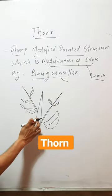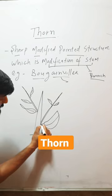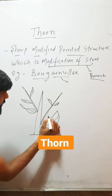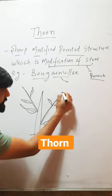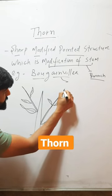Here you can see that this is the main stem, and these are leaves. From the axil of these leaves, a branch arises. These branches that bear leaves become pointed.